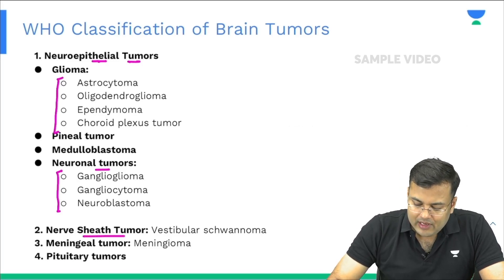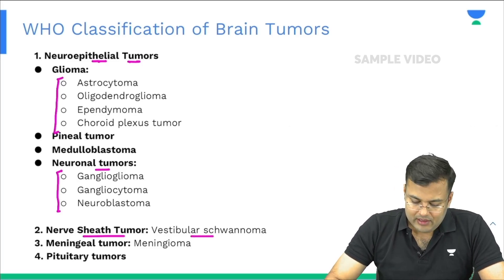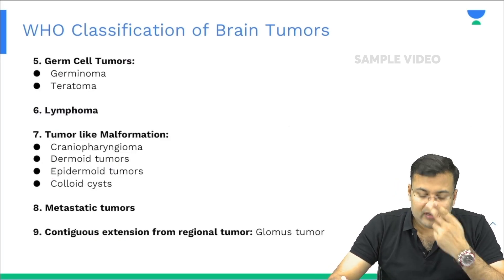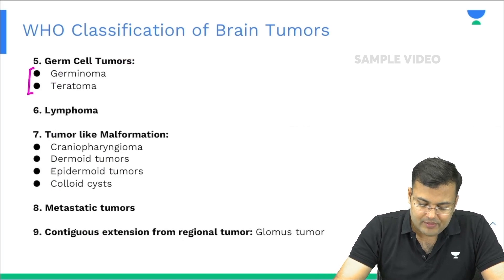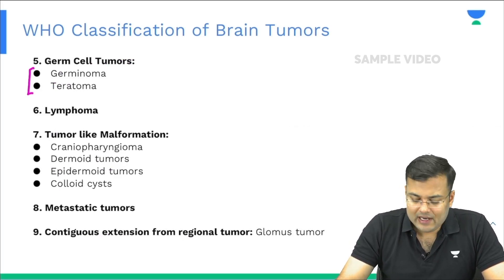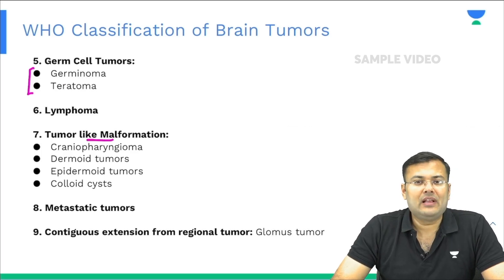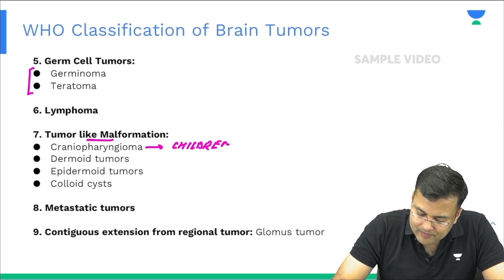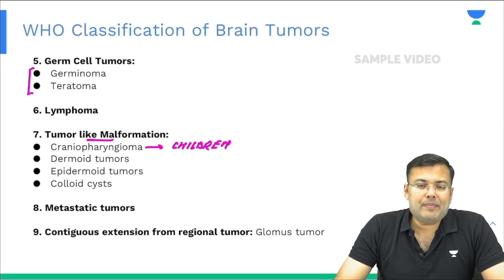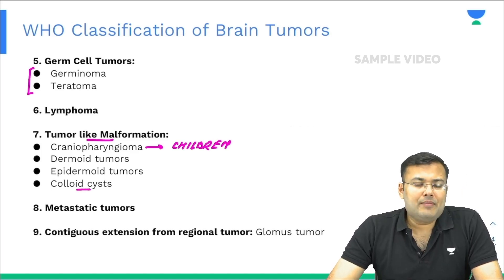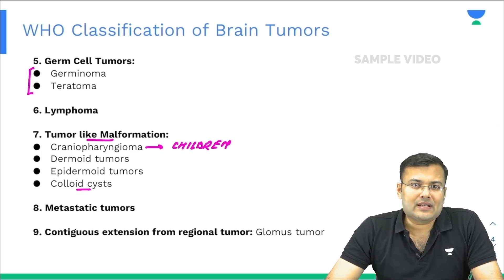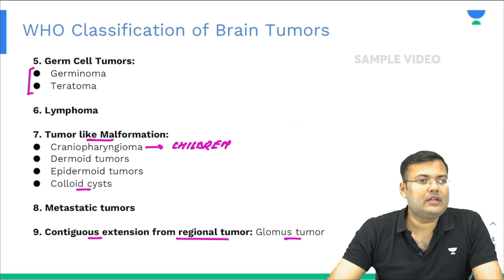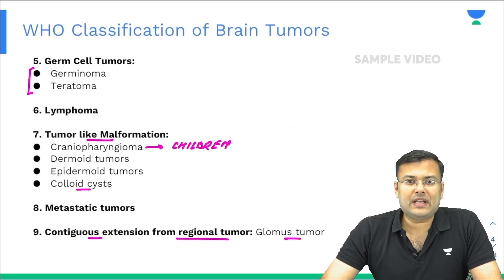Then there is nerve sheath tumor — example: vestibular schwannoma. There is meningeal tumor — example: meningioma. There is pituitary tumor. In germ cell tumors we include germinoma and teratoma. There is lymphoma, and tumor-like malformations like craniopharyngioma (more common in children), dermoid tumor, epidermoid tumor, colloid cyst, and metastatic tumor. The most common brain tumor overall is metastasis or secondaries, which can also occur by contiguous extension from regional tumors — example: glomus tumor.